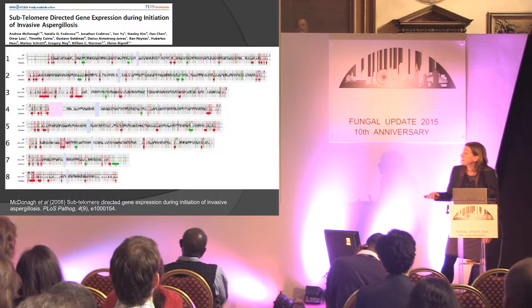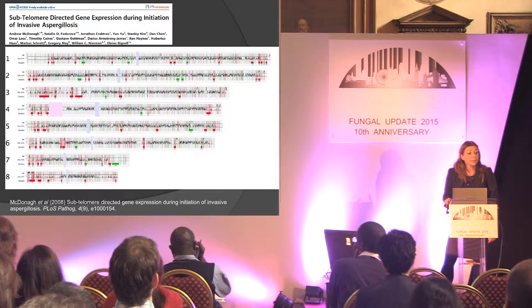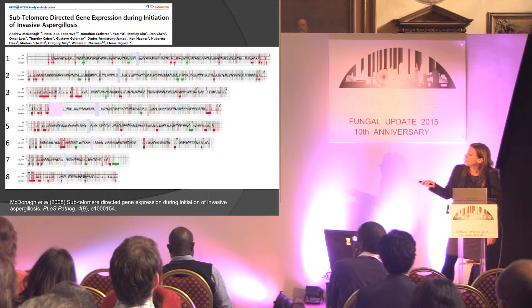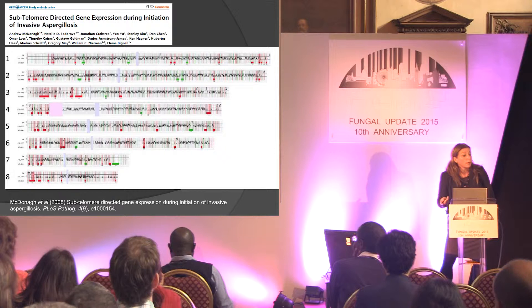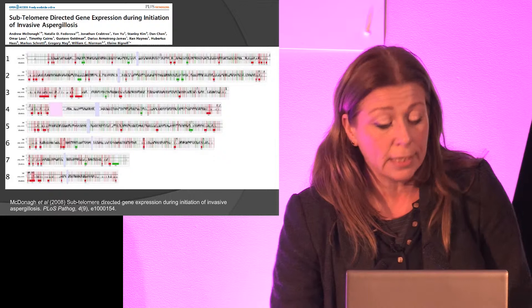Some up-regulated genes fell into gene clusters. One is the gliotoxin biosynthetic cluster, which we know is important in murine and human infection, and another on linkage group three is an iron acquisition cluster. We've been working on these pockets of genes and that work is due to continue for some time.